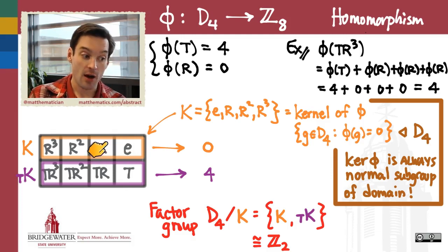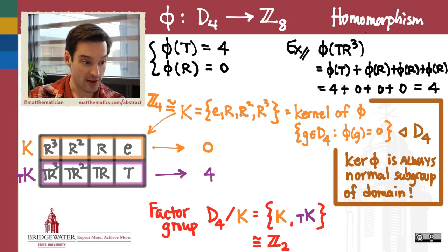Meanwhile, the original normal subgroup, e, r, r², r³, that's a really nice subgroup. That's a cyclic subgroup, and its generator, for example, might be r. And so we can think of k here as being isomorphic to a cyclic group of order 4.